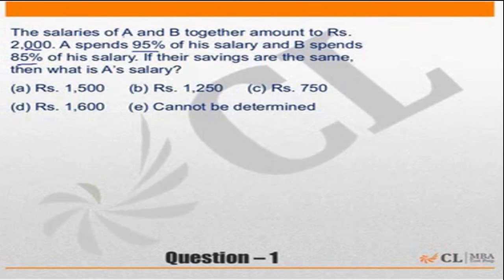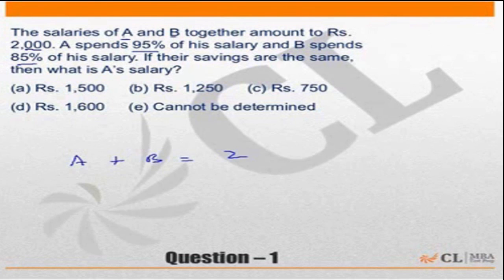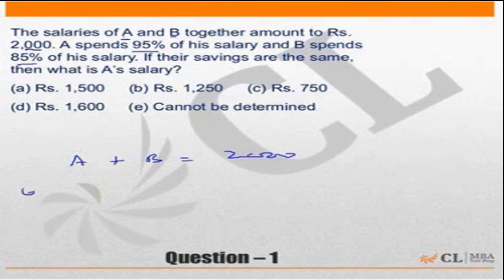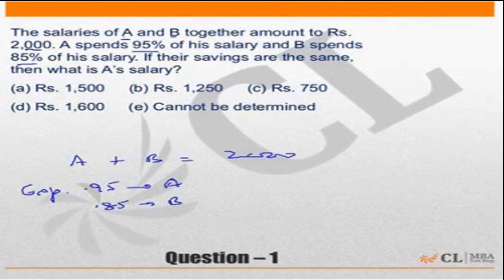Let us look at how we would do this in a normal situation. A and B together earn 2000 rupees. The salary of A is A and salary of B is B, so A plus B equals 2000. A spent 95 percent of its salary, so expenditure for A is 0.95A, and expenditure for B is 0.85 times the salary, or 85 percent.